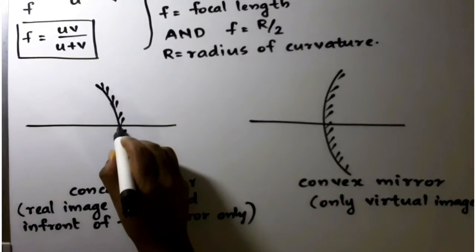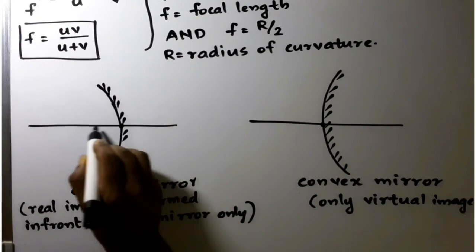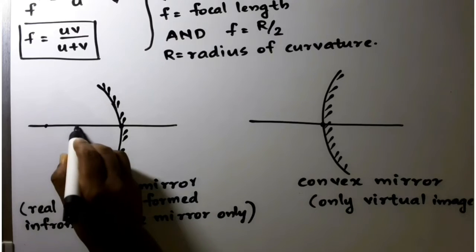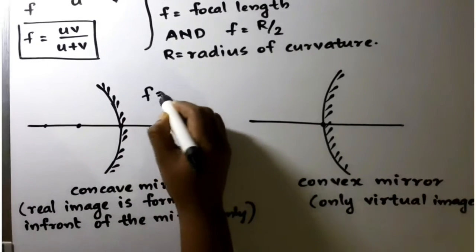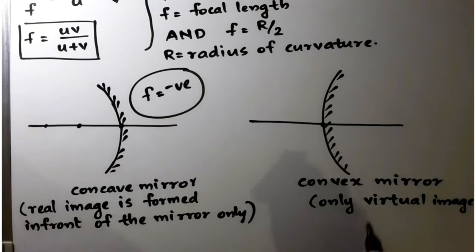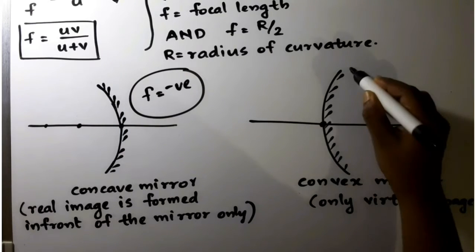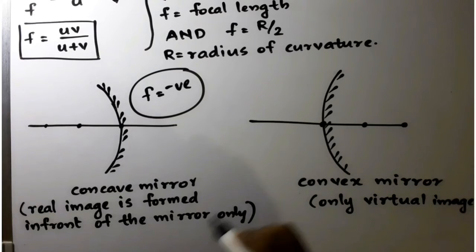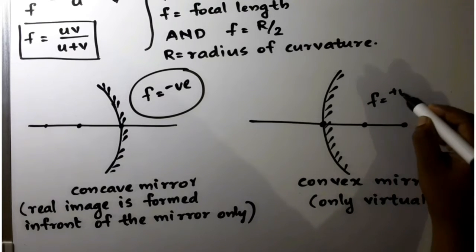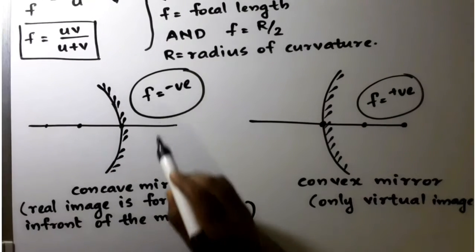We know the Cartesian sign convention. Here, the focus of a concave mirror is to the left side, meaning the focal length is negative — focal length is taken as negative for a concave mirror. But for a convex mirror, the focus is to the right of the origin, meaning the focal length is positive. So F is positive for convex mirrors and F is negative for concave mirrors.